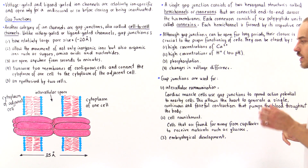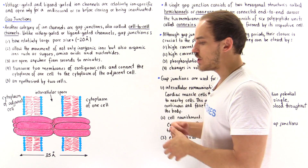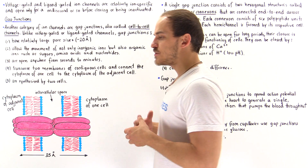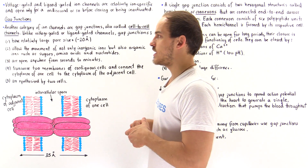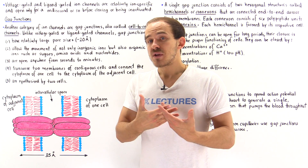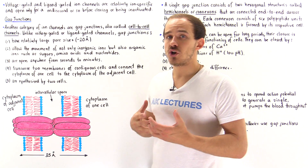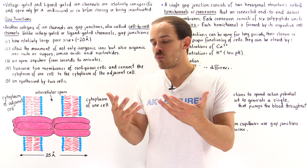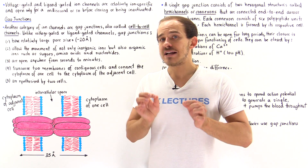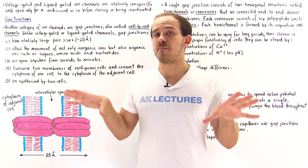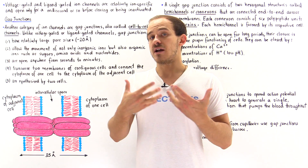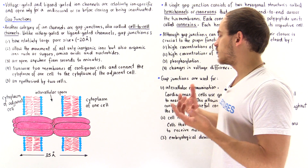For intercellular communication — meaning communication between adjacent cells — let's look at the heart as an example. In the heart, we have specialized muscle cells called cardiac myocytes, which are closely packed and contiguous. Many of these cardiac muscle cells are connected by gap junctions. When one cell receives an action potential, it can propagate into nearby cardiac myocytes via these gap junctions, allowing a continuous and forceful contraction of the entire heart to pump blood throughout the cardiovascular system.